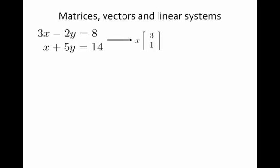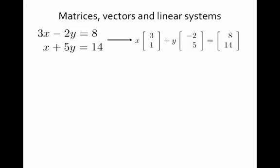But we can actually rethink of this as a single equation that involves vectors. If we think about 3, 1 and negative 2, 5 as the columns that correspond to x and y, then what I really have is x as a scalar times the vector 3, 1, plus y times the column vector negative 2, 5, equaling a single vector 8, 14.